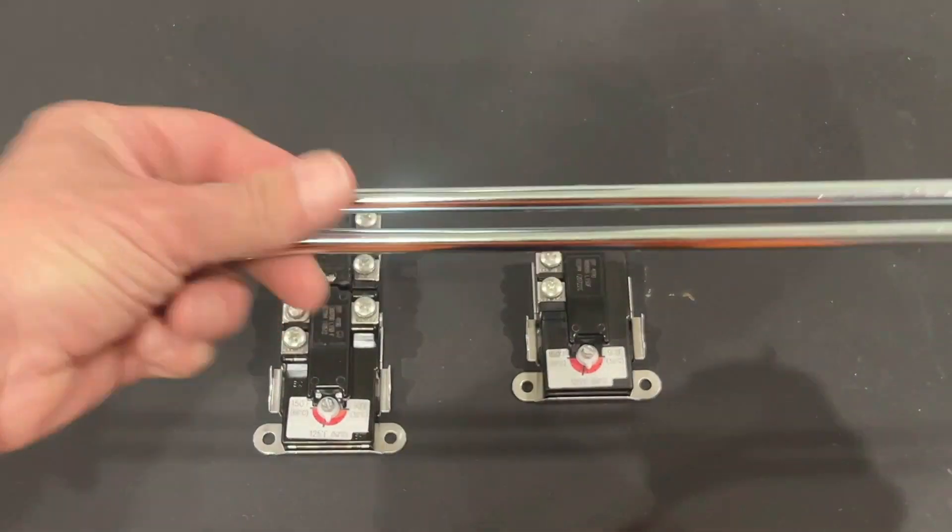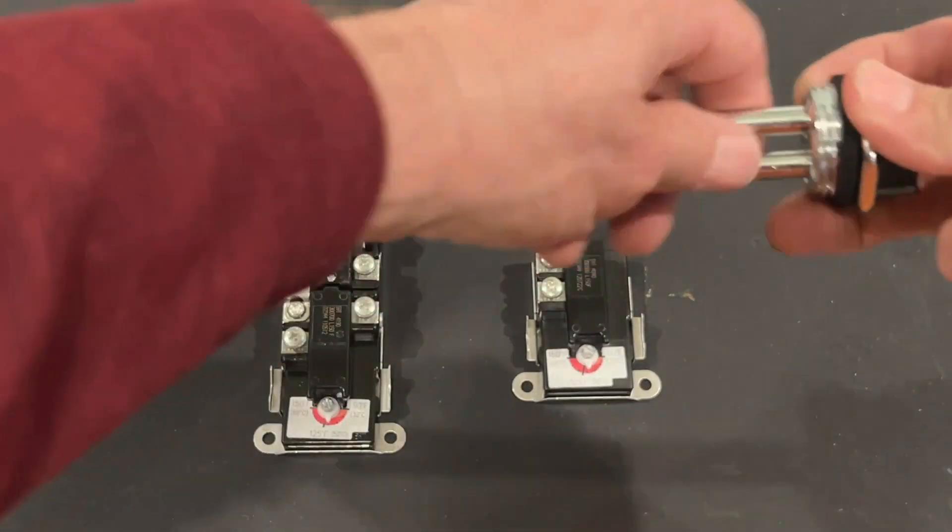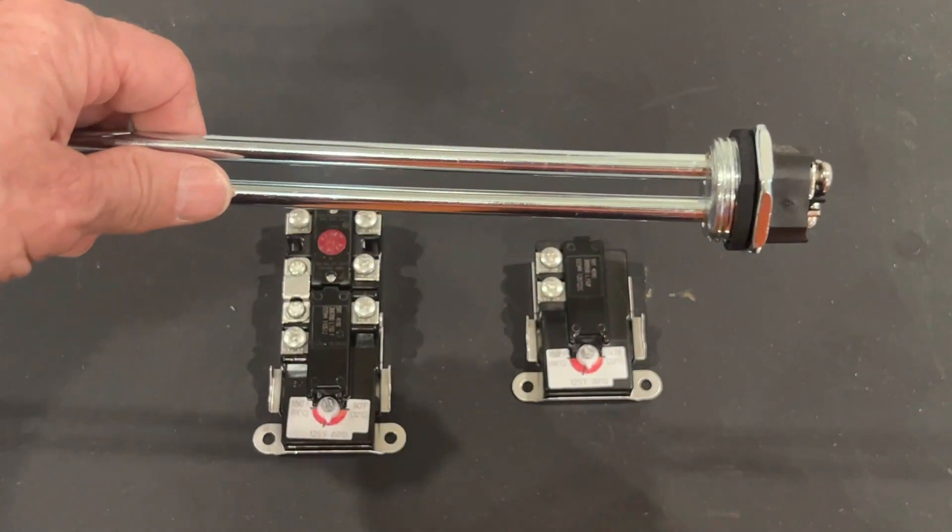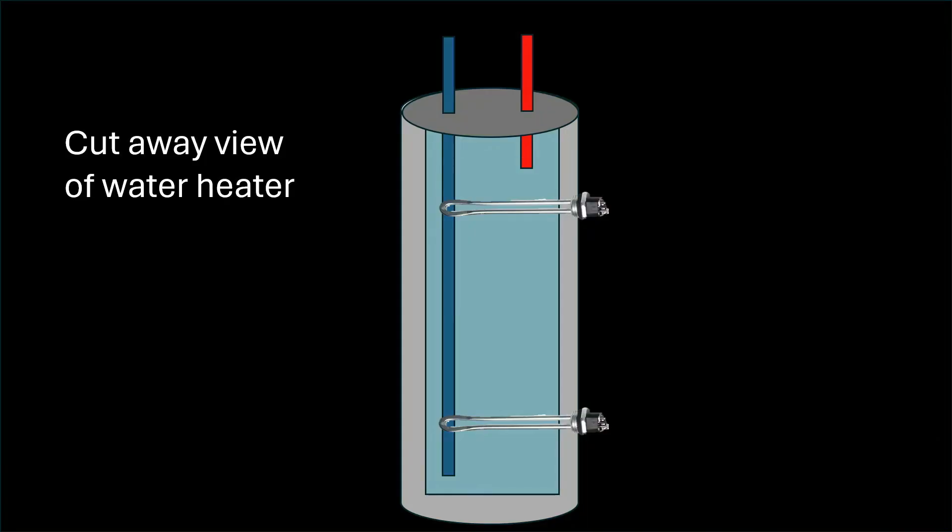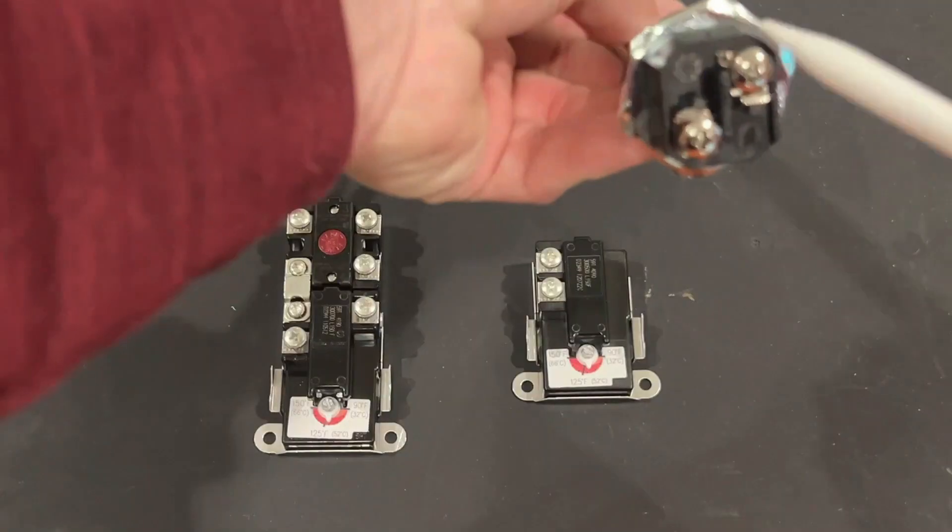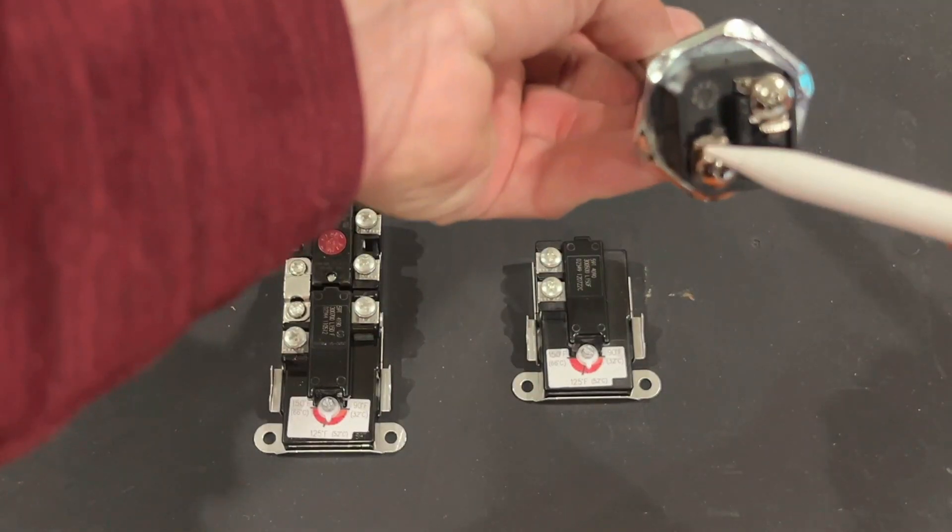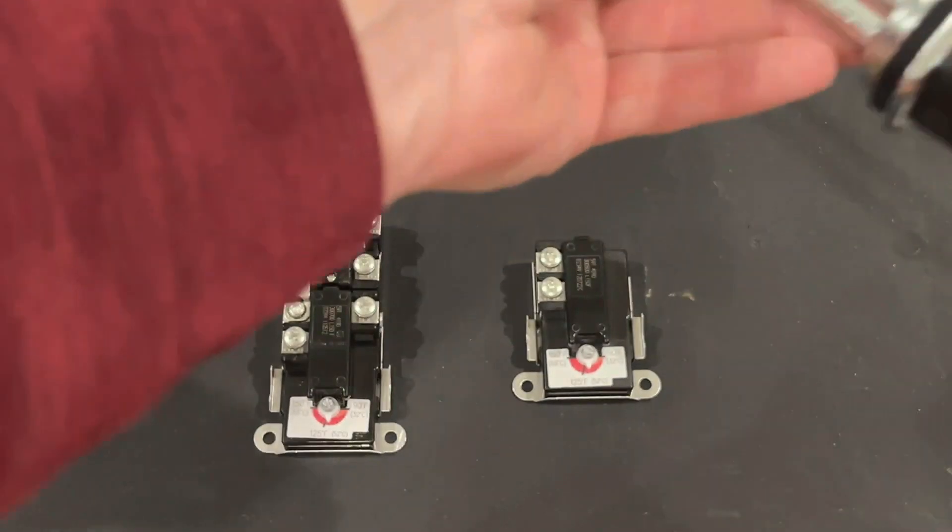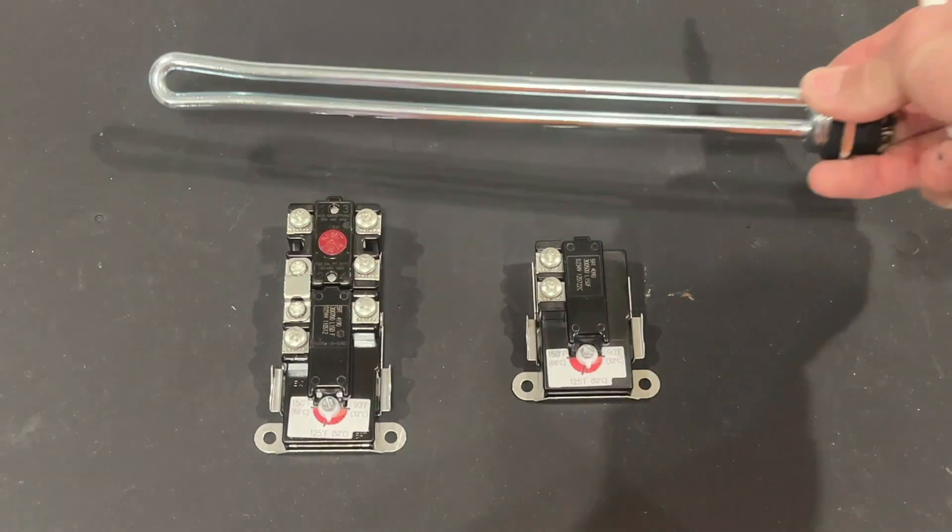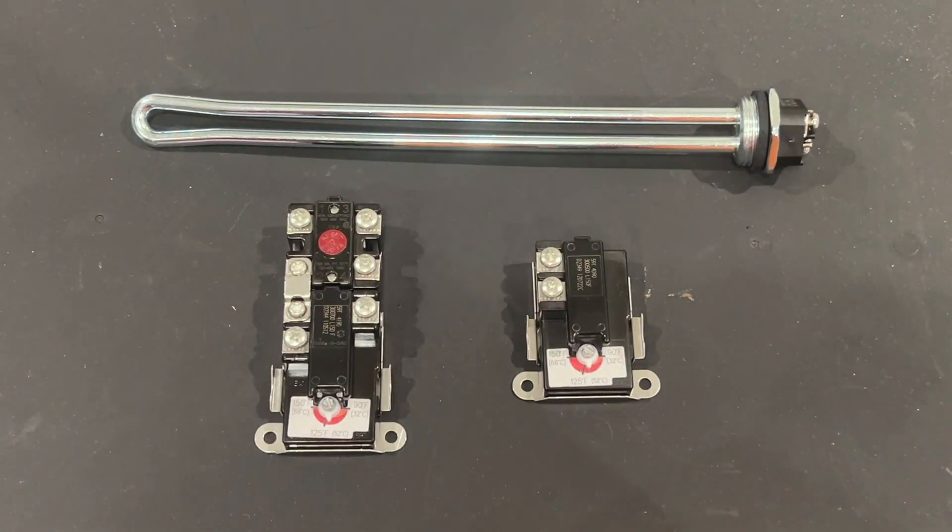So this heating element, this silver part is the part of the heating element that's actually inside the tank, inside the water, and it's what heats up to heat up the water. This is the part that's exposed on the outside of the tank and it's got wires connected to each of these two screws to send the 240 volt power. And both heating elements are typically identical in the water heater.